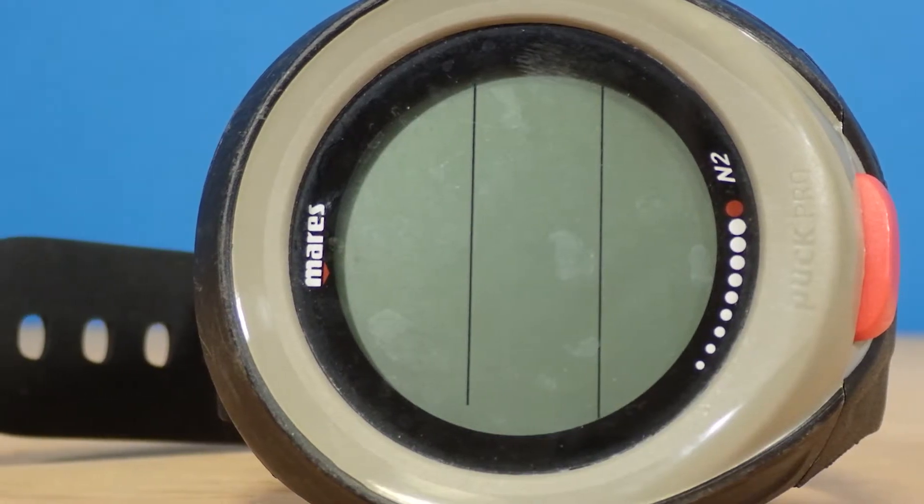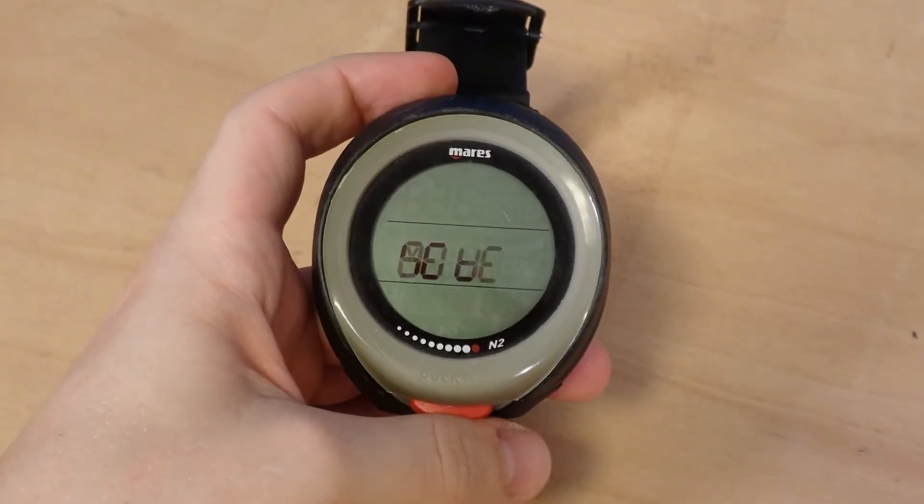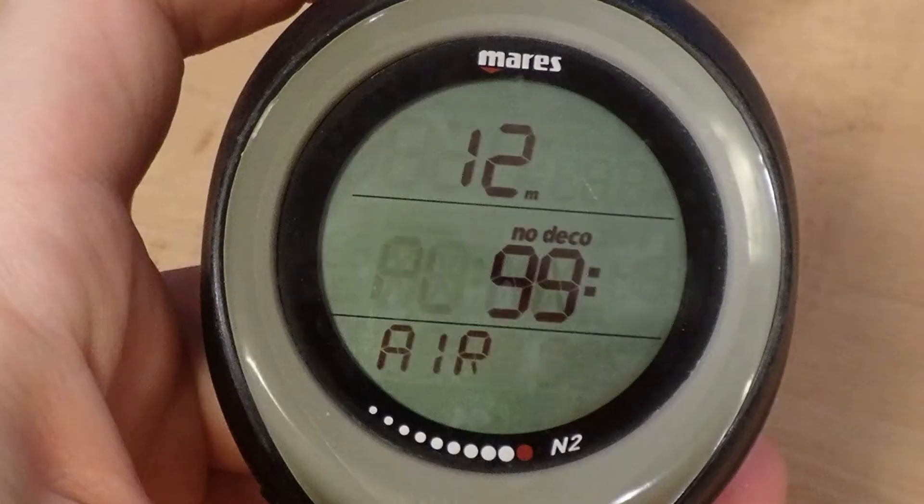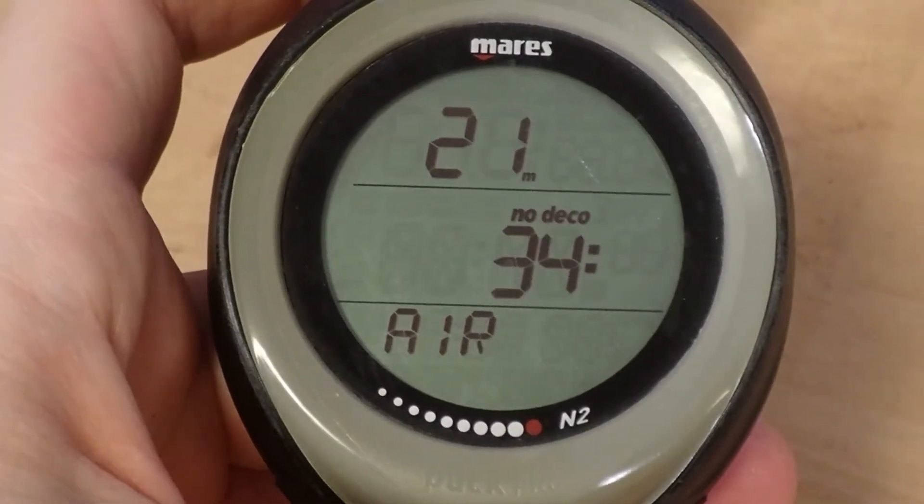In recreational diving, dive computers are mainly used to keep a diver informed of their no decompression limit so that they can ideally stay well within it. But how does your dive computer know how long you can safely dive at any given depth?